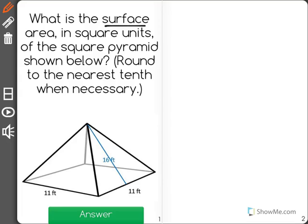What is the surface area in square units of the square pyramid shown below? Round to the nearest tenth when necessary. Now the surface area is the total area that the outside of the shape takes up.